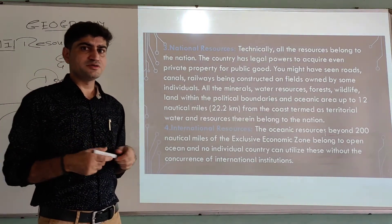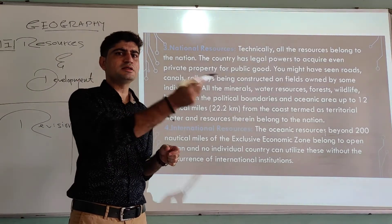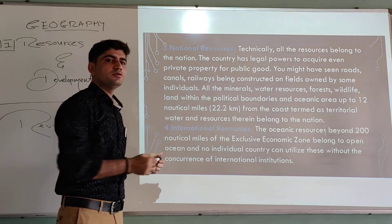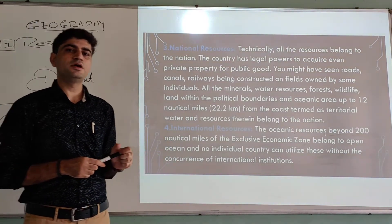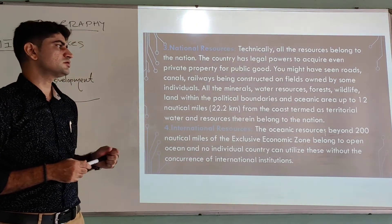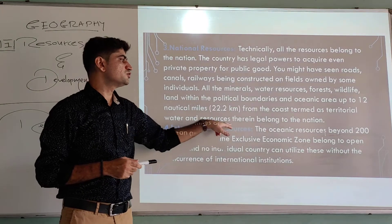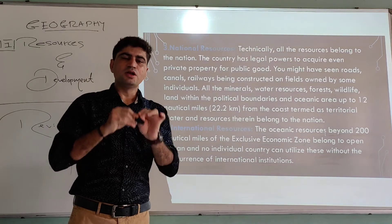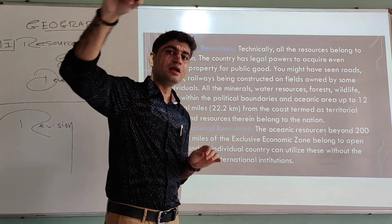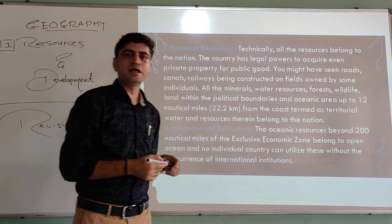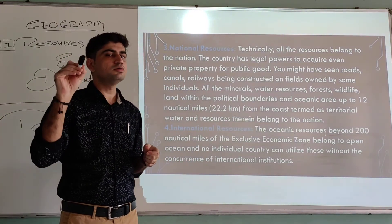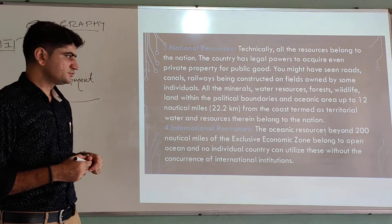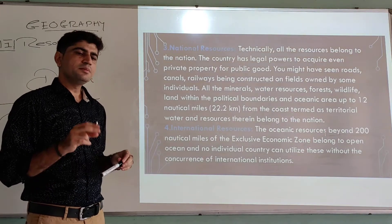As we have seen, a country has two types of boundaries: land boundary and oceanic boundary. The oceanic boundary extends up to 12 nautical miles — equal to 22.2 kilometers from the coast — termed as territorial water. Resources within the land boundary as well as within the oceanic territorial area all belong to the nation.